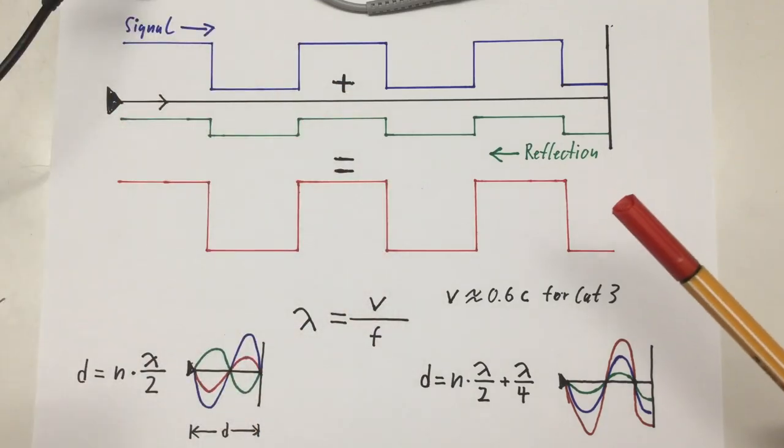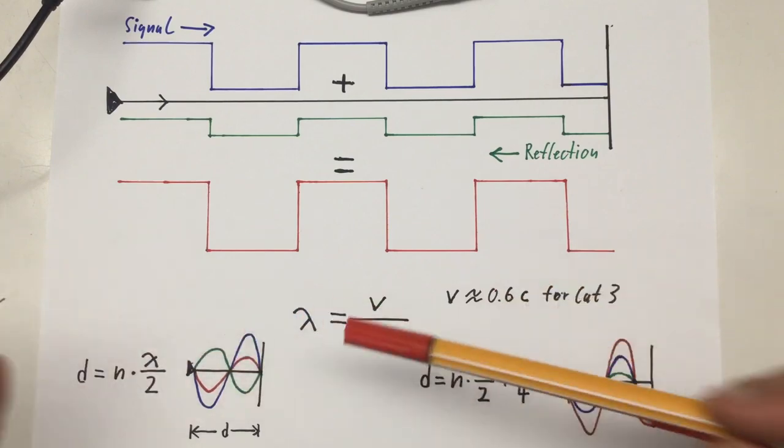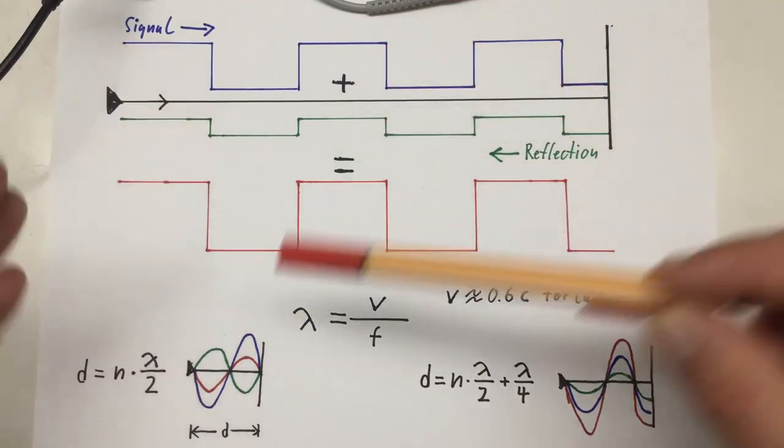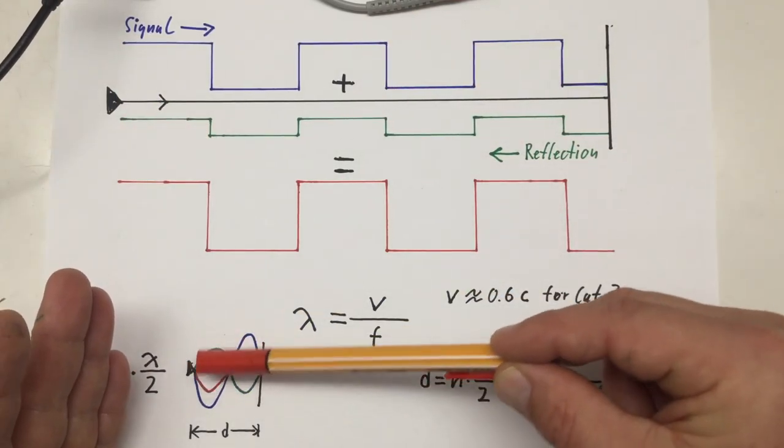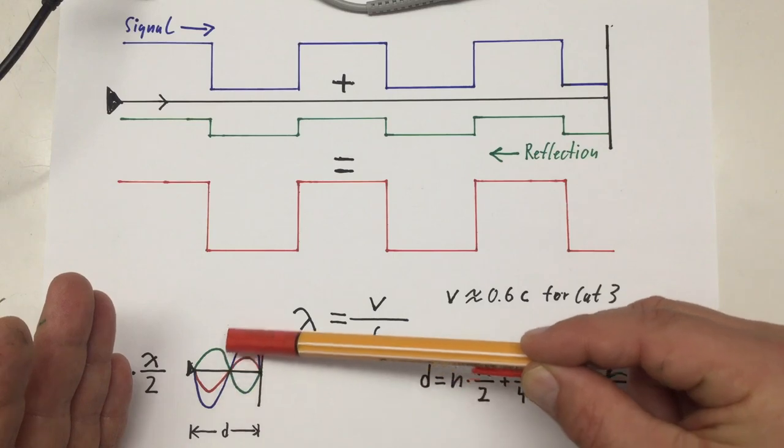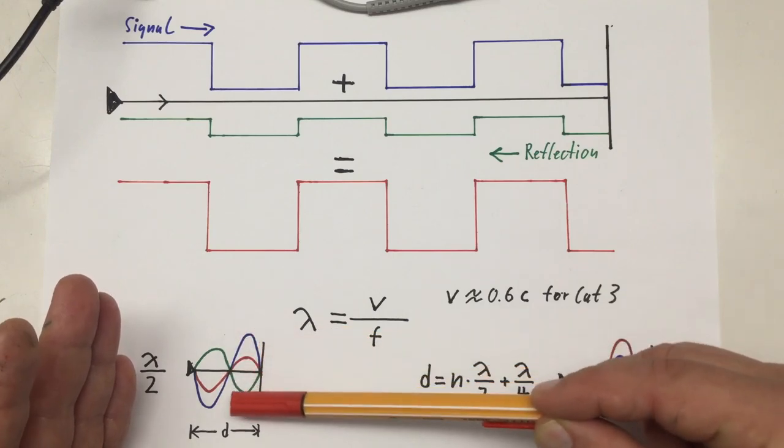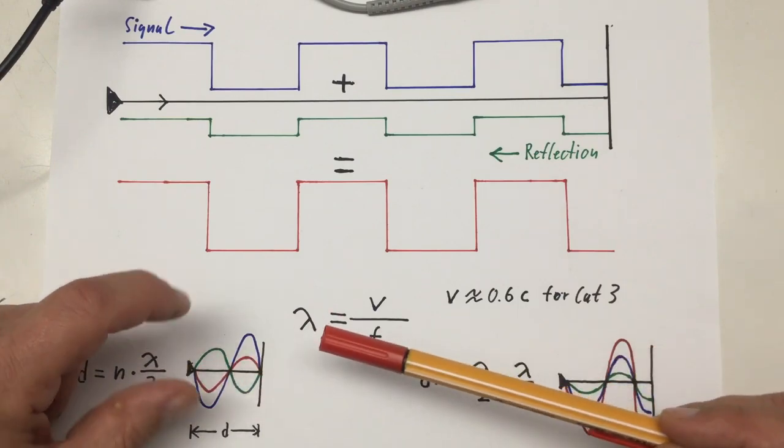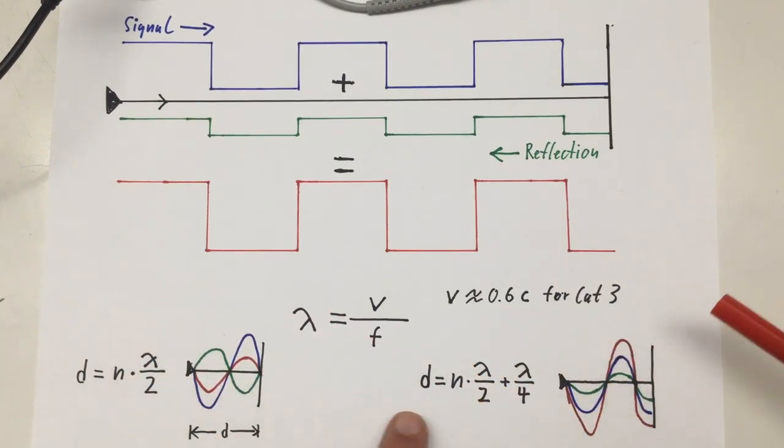Now if the length of our cable d is exactly n, n being a natural number—1, 2, 3, 4, 5, etc.—times lambda over 2, then we have a perfect destructive interference between our signal and the reflection. So we still retain the signal form but at a lower amplitude.